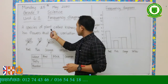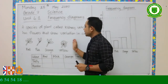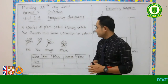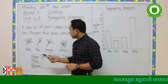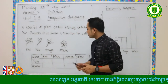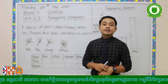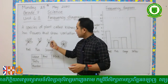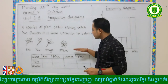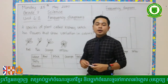Again, a species of plant called kidney veg has flowers that show variation in colors — they have different colors but they are all the same flower, only the colors differ. Kidney veg has flowers that have red, pink, orange, and yellow colors. I want you to record the results — count how many red, pink, orange, or yellow colors there are. I have a small table right here for you to record the results before we draw the frequency diagram.